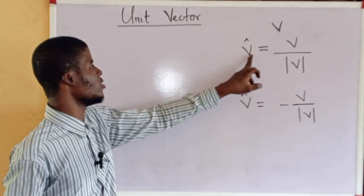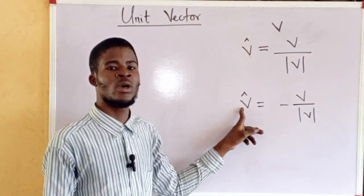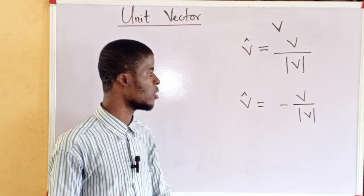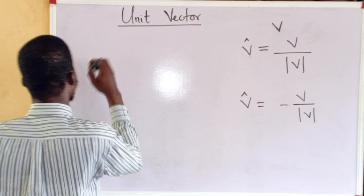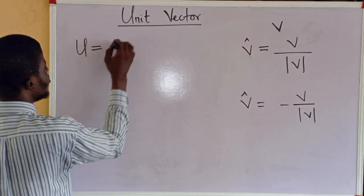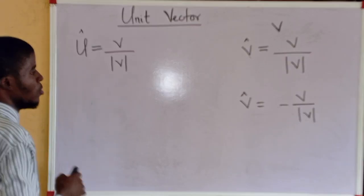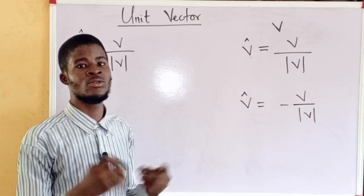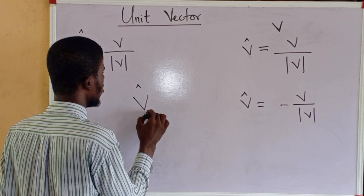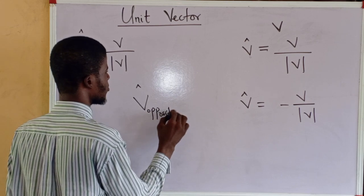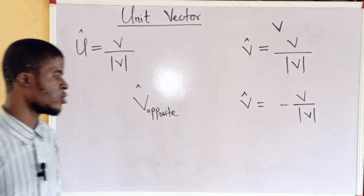So the first formula is when the unit vector is in the same direction or parallel to the given vector, and the second is when the unit vector is in the opposite direction. Sometimes the notation is written as U equal to V over the absolute value of V, or with a caret at the top — both refer to unit vectors. These are the notations for unit vectors. Let's go ahead and solve some problems.